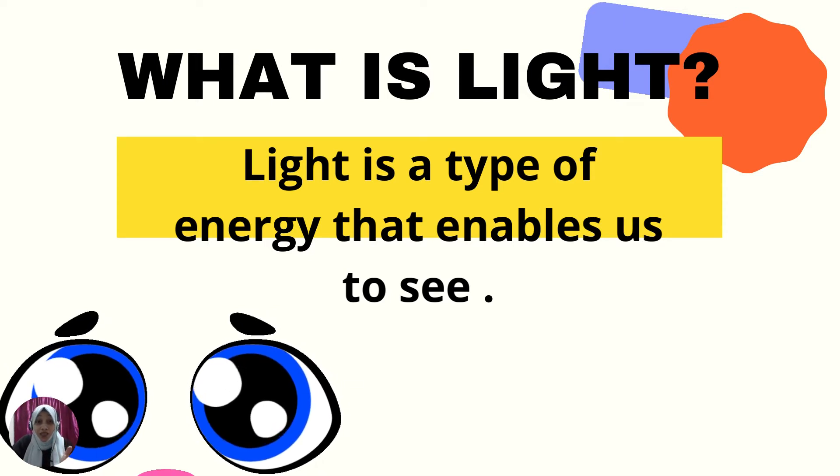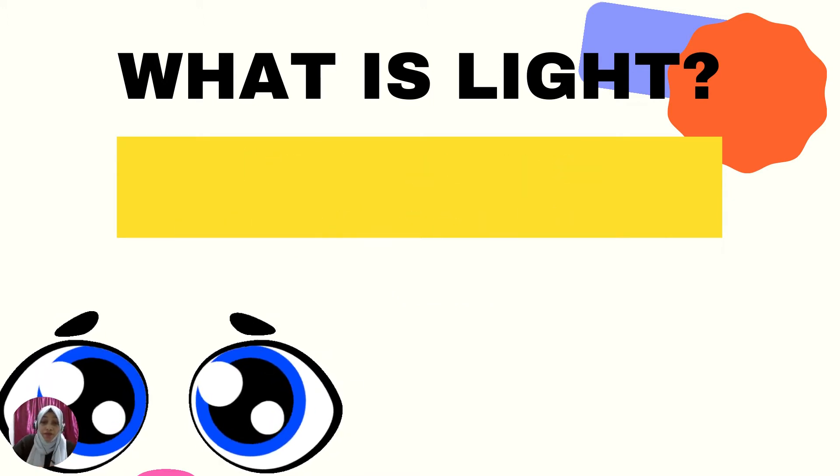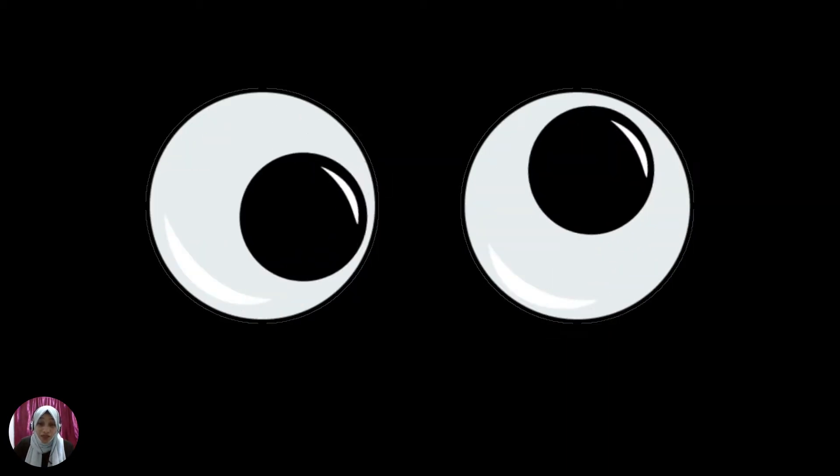So you're thinking that our eyes make us able to see, right? Have you tried to open your eyes in a dark room at night, for example? If you didn't, try today. Do you think you can see anything in a dark room, even when your eyes are open? No, we cannot see anything.